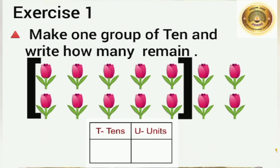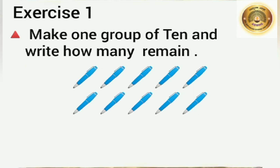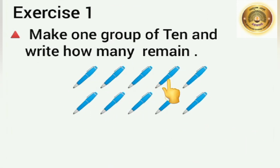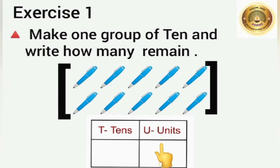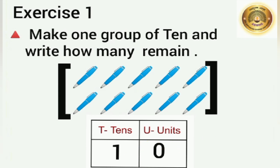On the left side we have to write 1 and on the right side we have to write 4. Here we can see pens — let's count: 1, 2, 3, 4, 5, 6, 7, 8, 9, 10. So let's make 1 group of 10. Now, students, tell me how many remain. Nothing. Means on the right side we have to write 0, and on the left side we have to write 1.